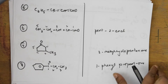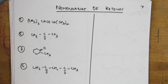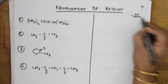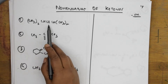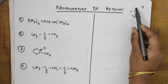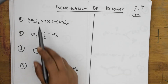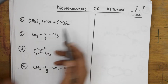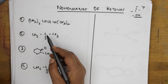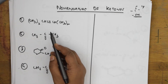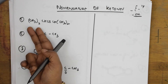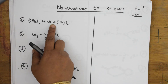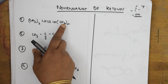Now let us do the nomenclature of ketones. Ketones use the suffix '-one'. The functional group is C double bond O; on either side you have alkyl groups. For this compound, you have two methyl groups on each side at equidistance, so first identify the parent chain. On either side there are two carbons — that is two substituents, so both are taken as dimethyl.